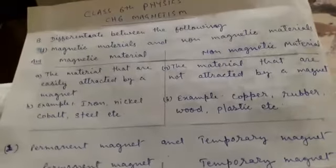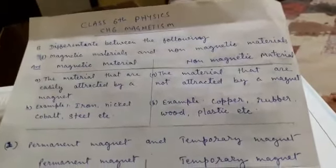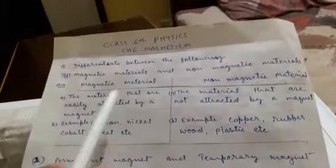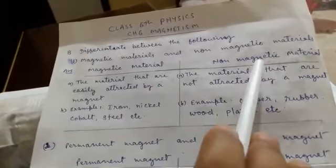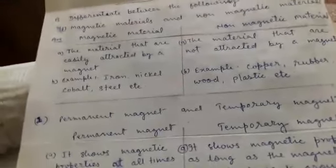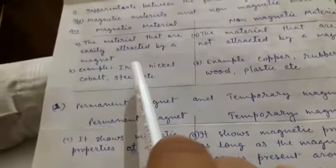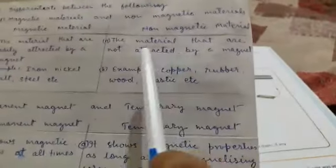Now we will see: Differentiate between the following. First question: Differentiate between magnetic material and non-magnetic material. Make two columns. Magnetic material: the materials that are easily attracted by a magnet are called magnetic materials. Examples: iron, nickel, cobalt, steel, etc. Non-magnetic material: the materials that are not attracted by a magnet are called non-magnetic materials. Examples: copper, rubber, wood, plastics, etc.